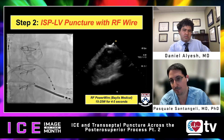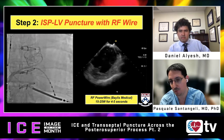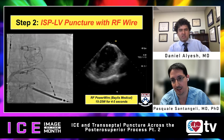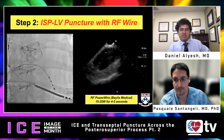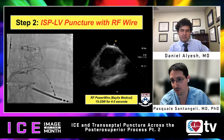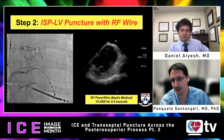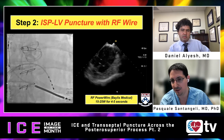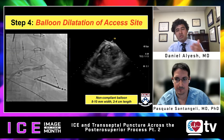ICE is critical to understand the angle — you want to be as perpendicular as possible to minimize the path the wire, balloon, and sheath must cross. You want the shortest amount of tissue traversed. Regarding tissue thickness: when we measure it, it is anywhere from five to ten millimeters on average — about five millimeters measured on ICE. This is much thinner than the muscular septum used in the very first cases, which were much thicker and required much more effort to cross.